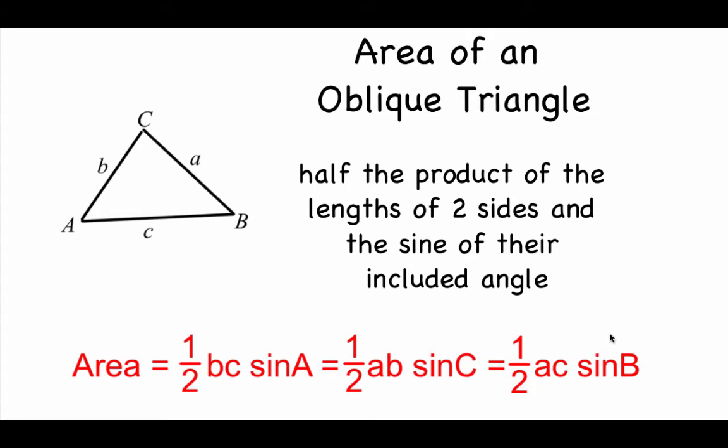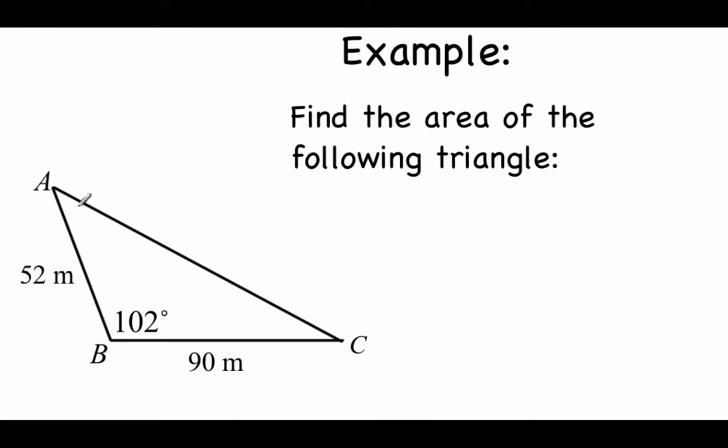So two sides and the angle between them. On this example, we've got triangle ABC. Looks like we're given side A as 90 meters, side C as 52 meters, and angle B is 102 degrees. If we're setting up that area formula, we're going to go one half times the two sides. So we've got 52 and 90, and then we want to do the sine of the angle between them, which is 102 degrees.